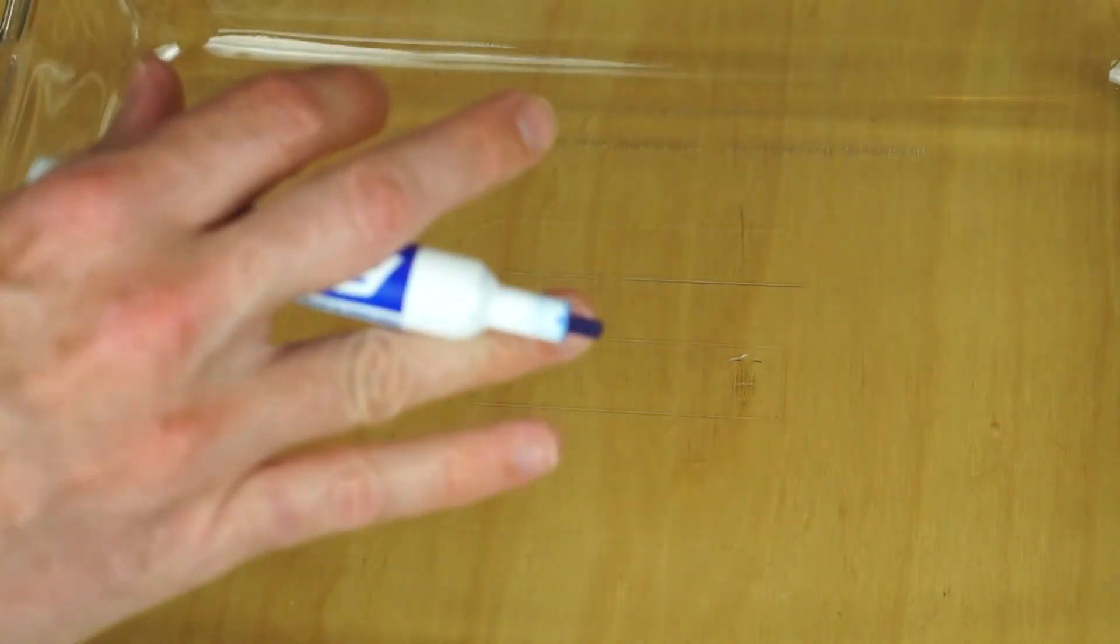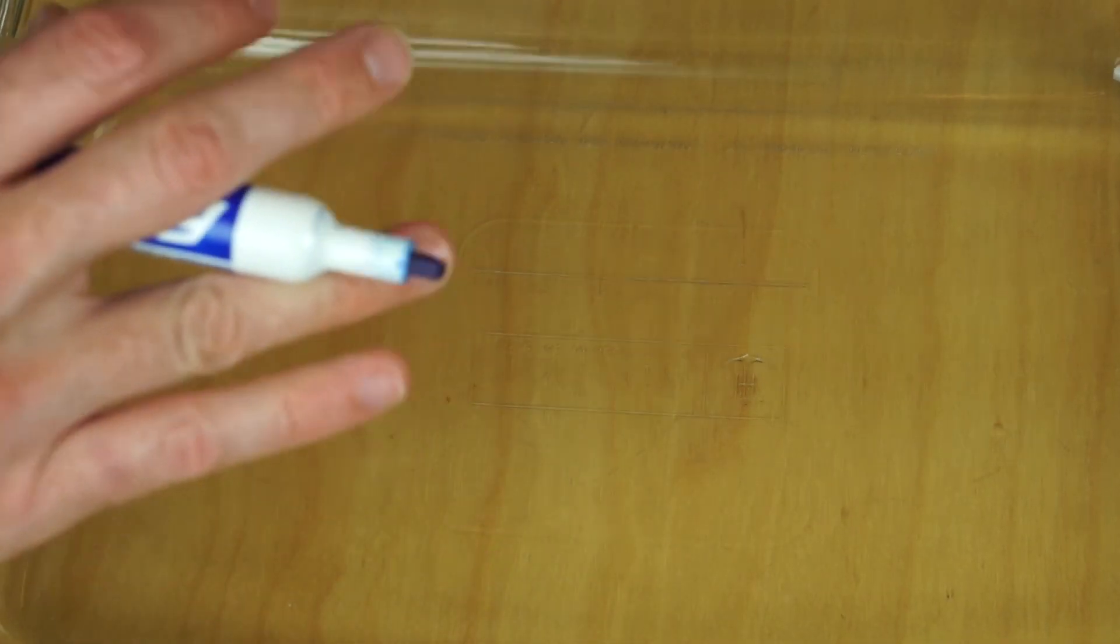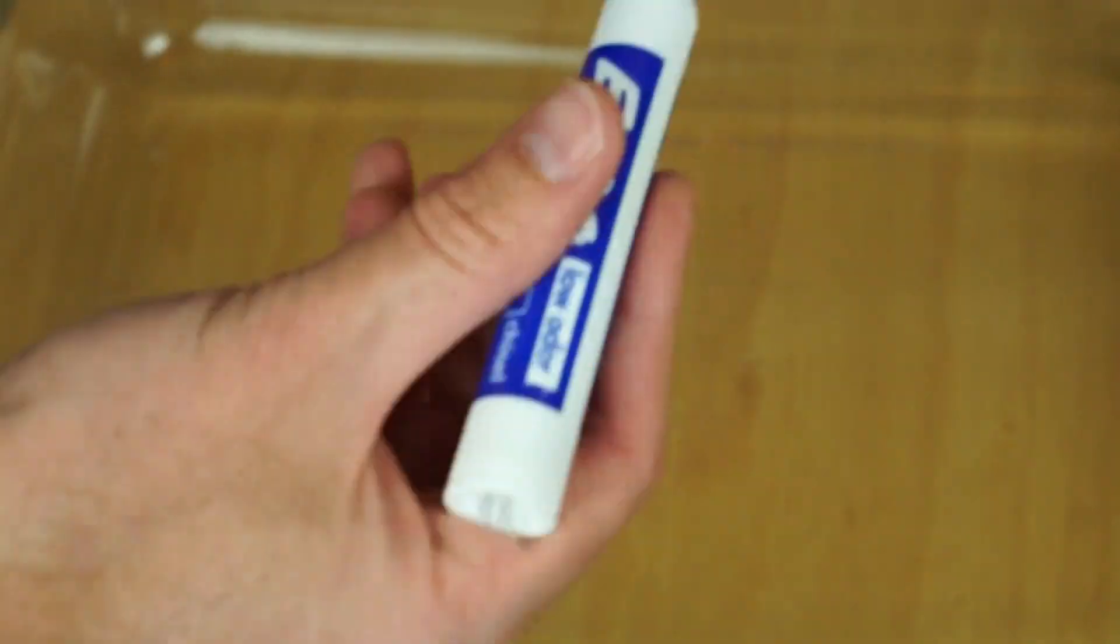So in order to do this trick, all you need is a glassy or very smooth surface with no pores, a dry erase marker, and some water.